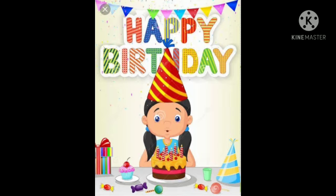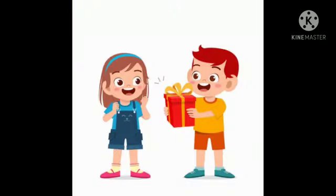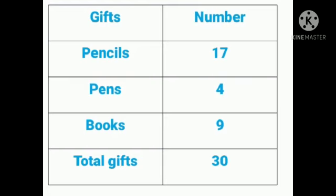It was Sonu's birthday and her friends came to her birthday party. Everyone wished her happy birthday and gave her gifts. Sonu wanted to sort out her collection of gifts, so her friends helped her. Tony put the gifts into groups, Salma counted the books, Sonu counted the pens, and Tony counted the pencils. Dandu wrote down this information on a slate, and this became a table.